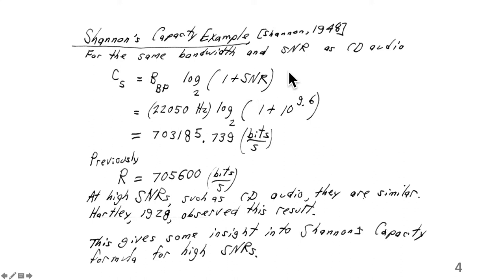If we just put the numbers in for the same bandwidth and signal-to-noise ratio as in CD audio, then the bandwidth is 22,050 hertz, and the SNR is 10 to the 9.6. Or Shannon's capacity formula predicts the maximum bit rate you could achieve is 703,185.739 bits per second. It's only really relevant to a few significant digits. But previously, it was shown that the bit rate from CD audio is 705,600 bits per second. And it's no coincidence that these are similar. At high signal-to-noise ratios, such as CD audio, they are similar, and Hartley observed this result in 1928. And it gives some insight into Shannon's capacity formula for high SNRs without going through the random coding bound that Shannon used in 1948.